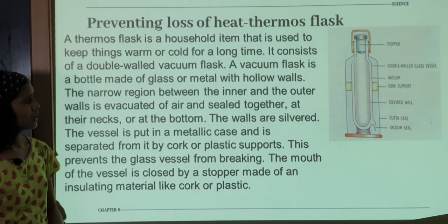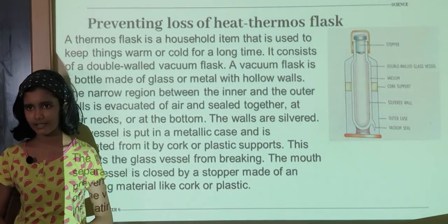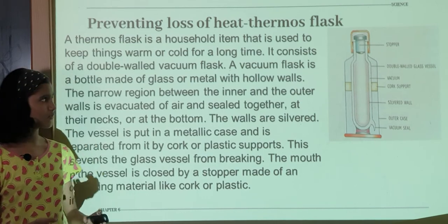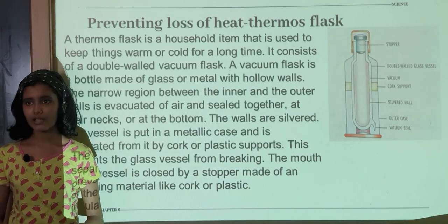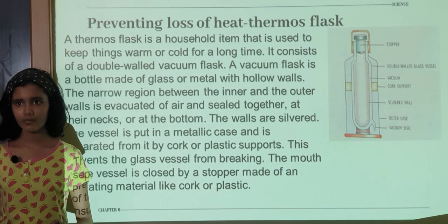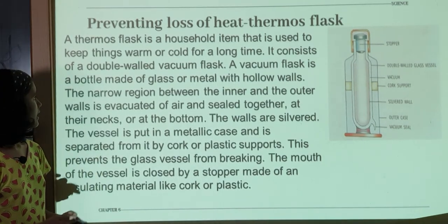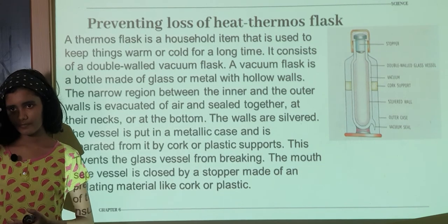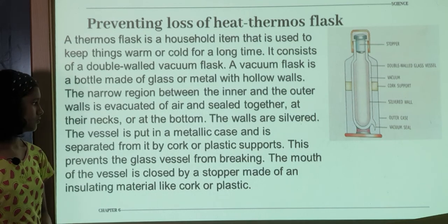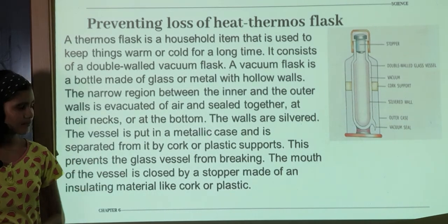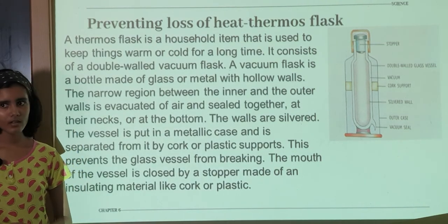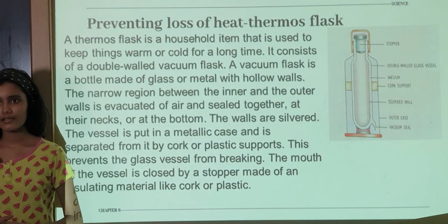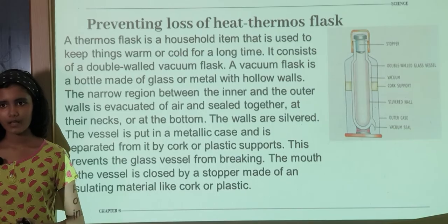Preventing Loss of Heat — Thermos Flask. A thermos flask is a household item used to keep warm things warm and cool things cold. A thermos flask consists of a double-wall vacuum flask, which is a bottle made of glass or metal with hollow walls. The narrow region between the inner and outer wall is evacuated of air and sealed at the neck or bottom. The walls are silvered. The vessel is put in a metallic case separated by a plastic support. The mouth is closed by a stopper made of an insulating material such as plastic or cork.